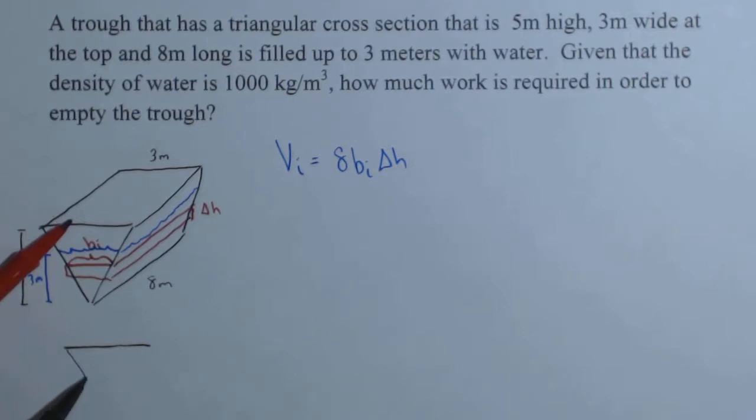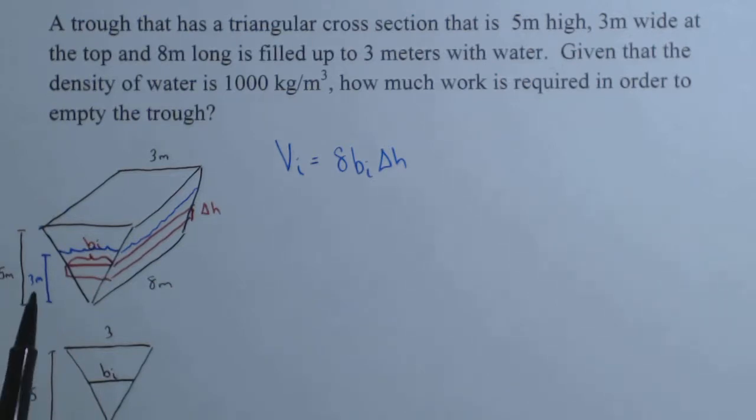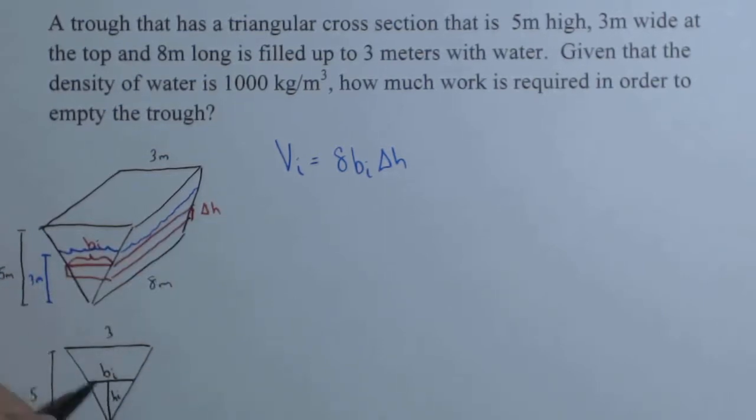If I look at my triangle sideways, here's my slice. I've called that b sub i, and I know that this is 3 meters, and I know that the height is 5 meters. I'm going off the actual trough, I'm not worried about the water dimensions right now. We need another variable in here, and because we call this delta H, let's call this H sub i. So H sub i is this distance right here.